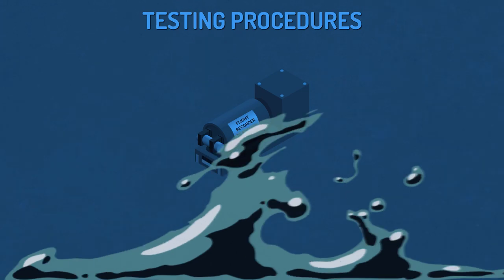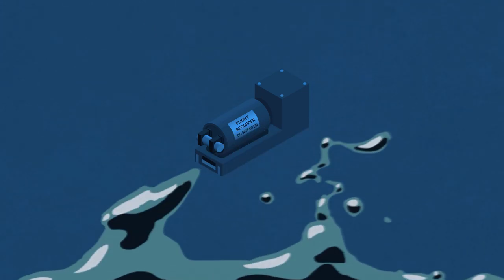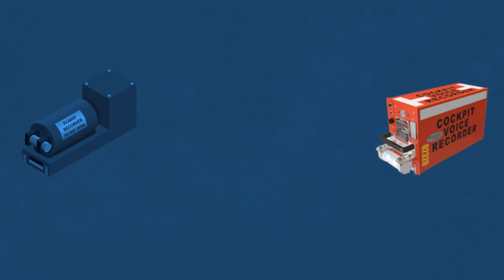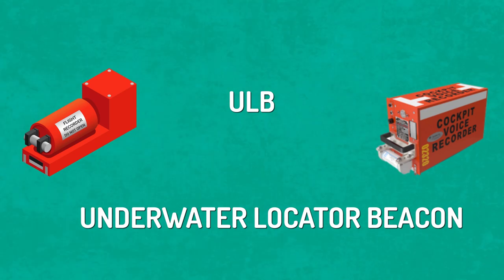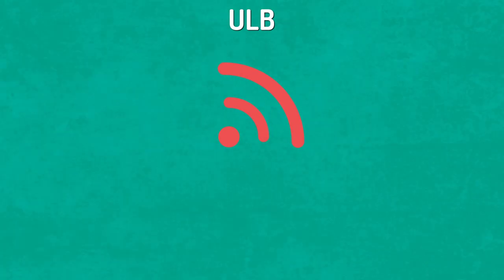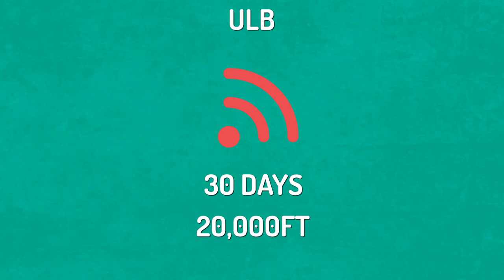Regarding an airliner crashing into the ocean, black boxes do more than just withstand the hostile environment. Both recorders have been equipped with something known as a ULB, or an underwater locator beacon. This device can be seen on the front of the box and almost looks like a handle from a distance. The ULB projects an ultrasonic ping every second for a minimum of 30 days if submerged underwater, up to 20,000 feet — or nearly 7 kilometers deep.